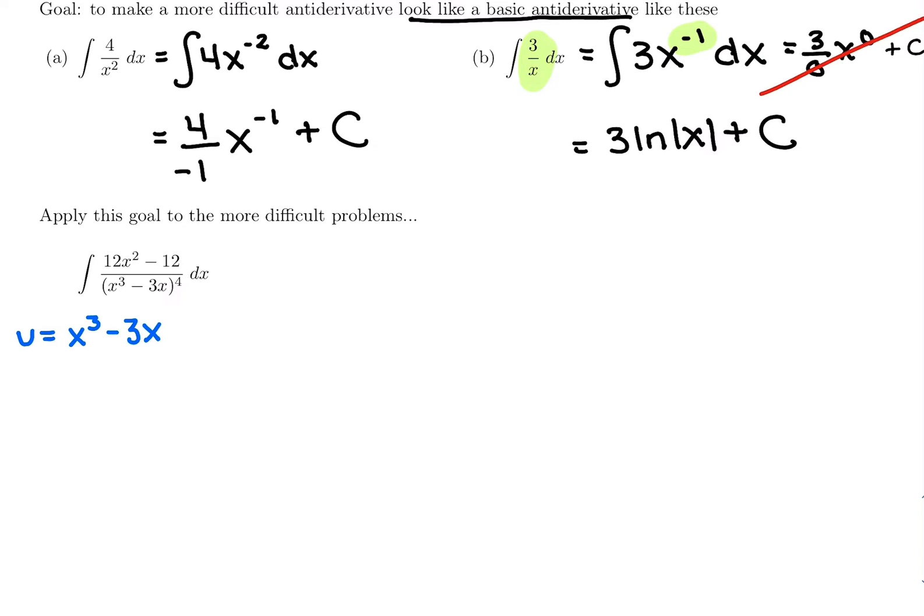So for this one, our u is going to be the expression in the denominator, x cubed minus 3x. We're going to take the derivative of that. Derivative of x cubed is 3x squared. Derivative of negative 3x is negative 3. And then we want to get du by itself, so we multiply both sides by dx.